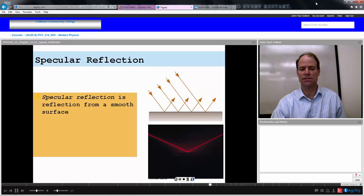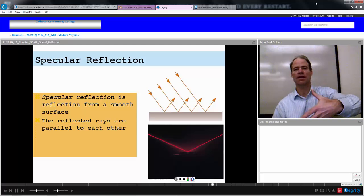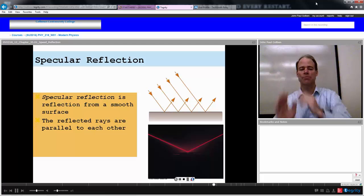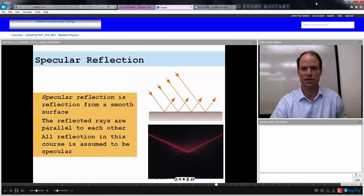We define specular reflection as something that looks like this. Reflection from a smooth surface, the reflected rays are parallel to each other. So, if you had different rays coming in, indicating the direction of light coming in, and it comes out, all those reflected rays are indeed parallel to each other. All reflection in this course that we're going to look at regarding the nature of light is going to be assumed to be specular reflection.